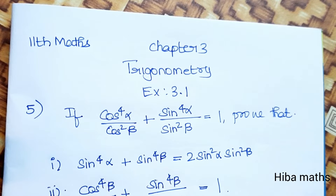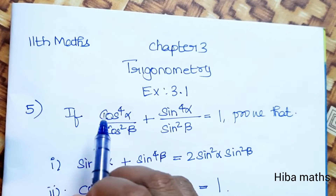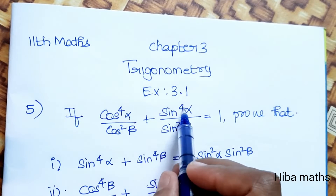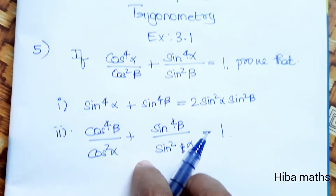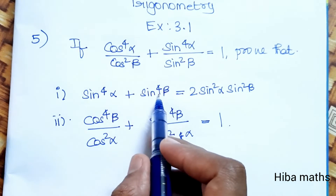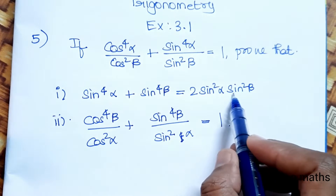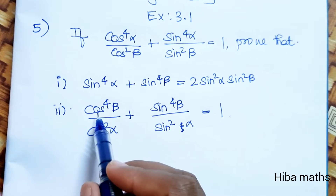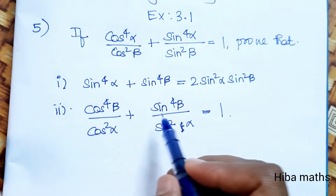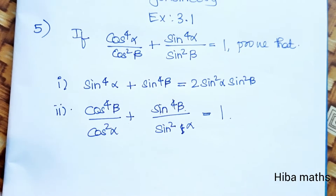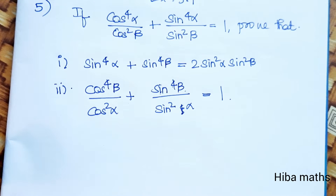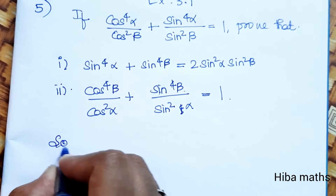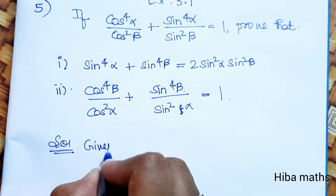Hello students, welcome to Hebamax 11th standard Math Chapter 3 Trigonometry Exercise 3.1, 5th question. If cos⁴α/cos²β + sin⁴α/sin²β = 1, prove that — there are two subdivisions to prove. Every condition, we need to prove both subdivisions. So first let's note what is given in the solution.